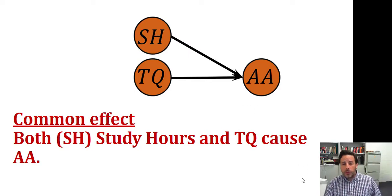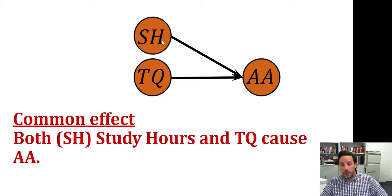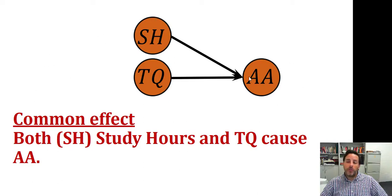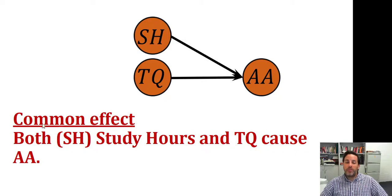Here is another important concept: common effect. We have study hours and teaching quality, both causing academic achievement. Academic achievement is a common effect — not a common cause like before, where one variable causes two others. Here, one variable is the consequence or effect of two other variables. So we say that study hours and teaching quality have a common effect.